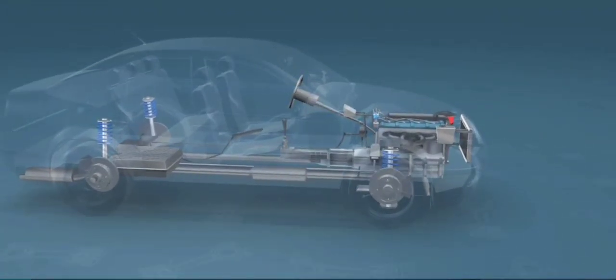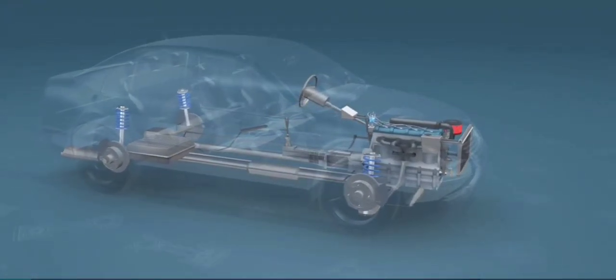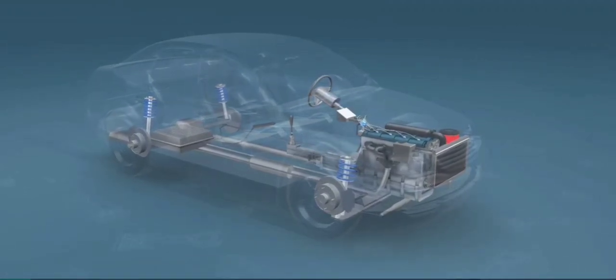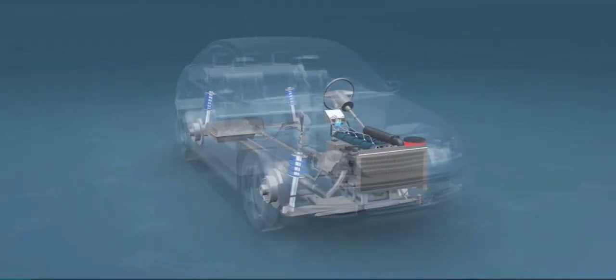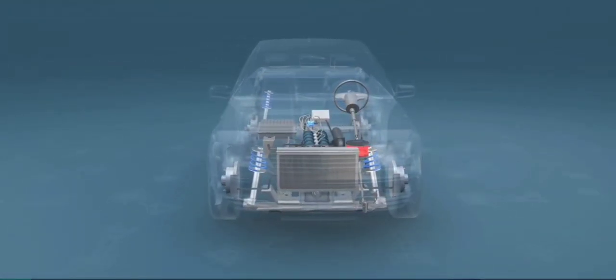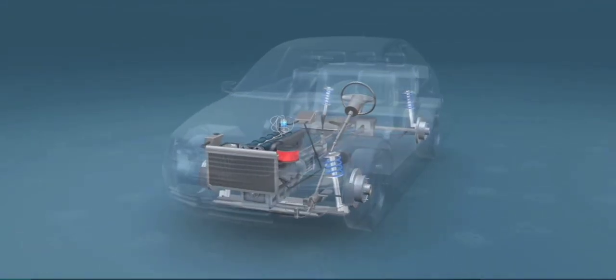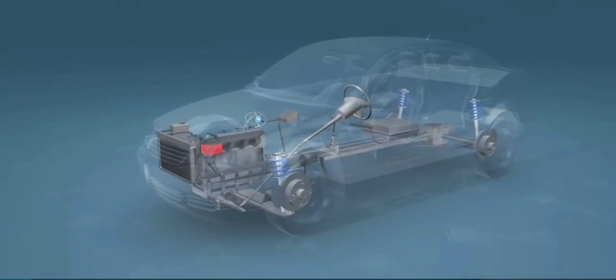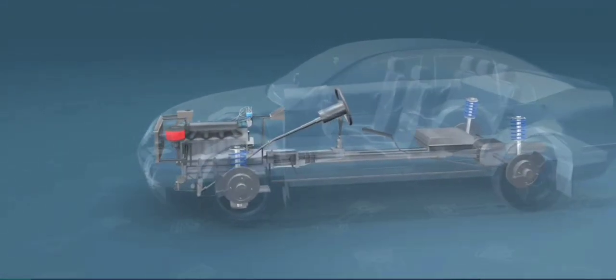Nicholas August Otto was a traveling salesman for a grocery concern. In his travels he encountered the internal combustion engine built in Paris by Belgian expatriate Jean Joseph Etienne Lenoir in 1860. Lenoir successfully created a double-acting engine that ran on illuminating gas.